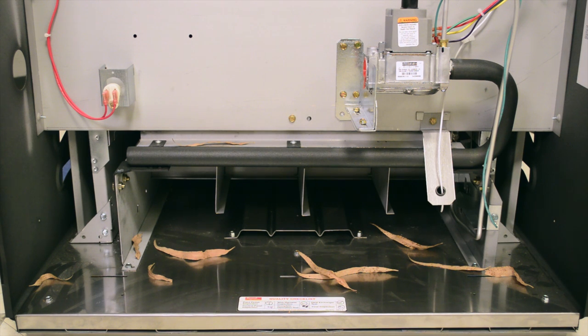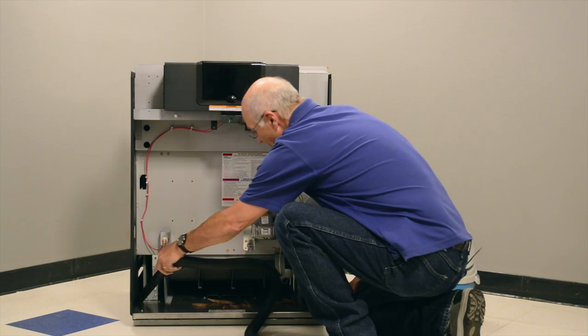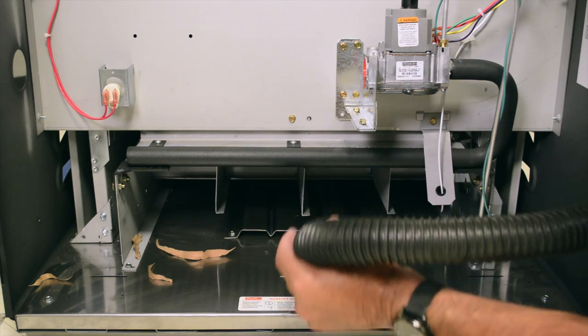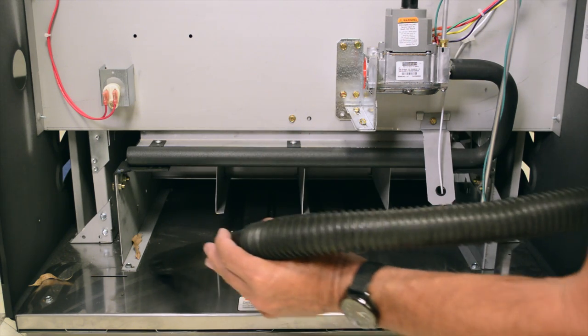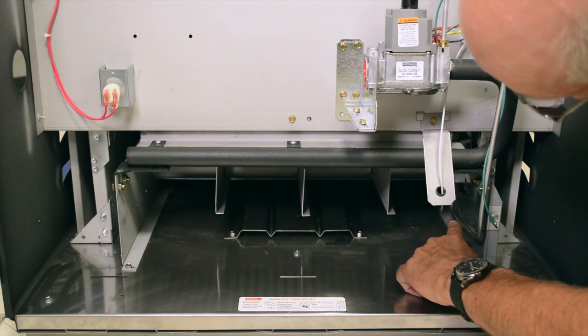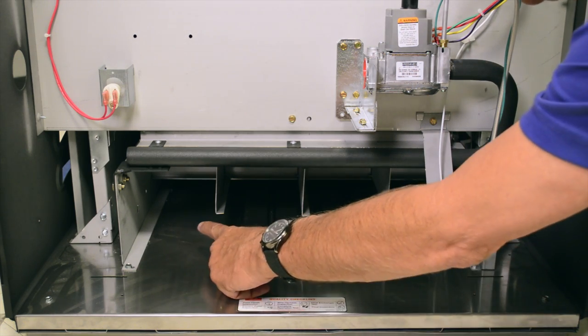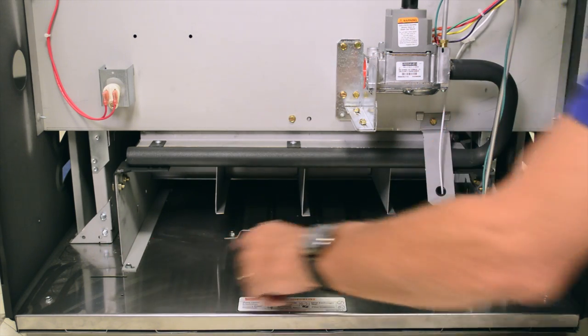Inspect the bottom of the heater cabinet for any debris. If it is dirty, use the industrial vacuum to clean it. Inspect the cabinet for any signs of water leak or overheating, including rust or burn marks.